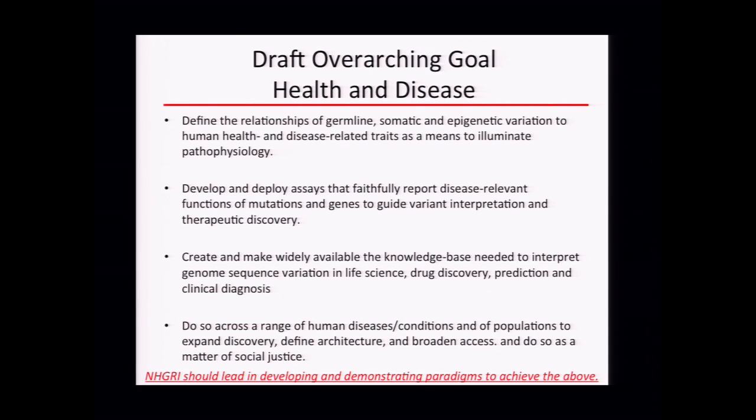What is the overarching goal? It's a series of steps really to define the relationship of germline, somatic, and epigenetic variation to human health and disease-related traits as a means to elucidate pathophysiology. We'll develop and deploy assays that faithfully report disease-relevant function and mutations in genes to guide variant interpretation and therapeutic discovery. Third, we'll create and make widely available the knowledge base needed to interpret genome sequence variation in the life sciences, drug discovery, prediction, and clinical diagnosis. And fourth, do so across the range of human diseases and conditions — including health — and a range of populations to expand discovery, define the genetic architecture, and broaden access.